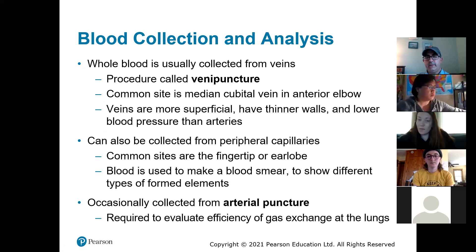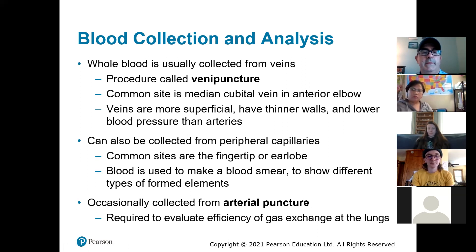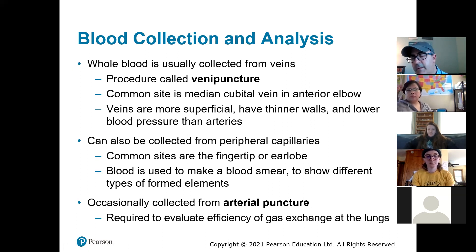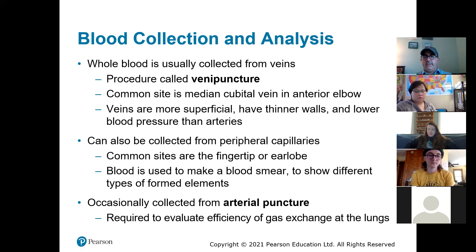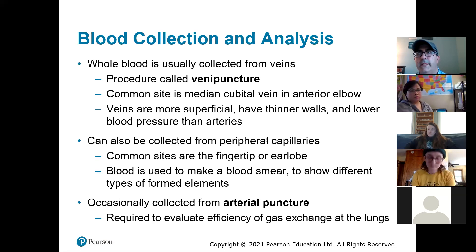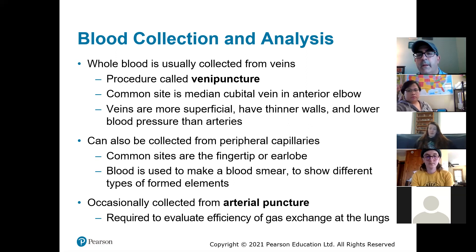When you give blood — whether you go to the doctor or donate blood — it's usually taken from the veins. It's a procedure called venipuncture, and the common site is the median cubital vein, which we'll talk about in a couple of chapters. That's the vein that runs across the inside of your elbow. Veins are usually used for taking blood because they tend to be closer to the surface, they're more superficial, they have thinner walls, and they have lower blood pressure than arteries.